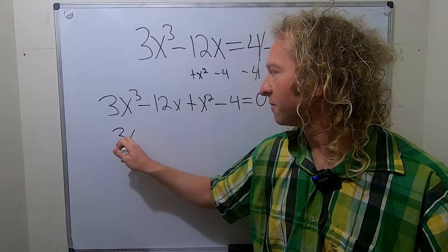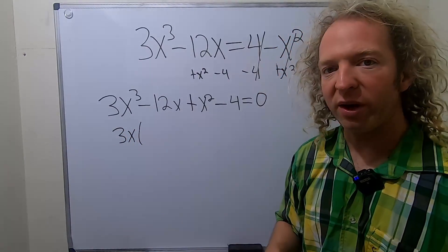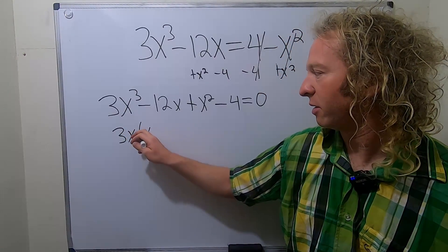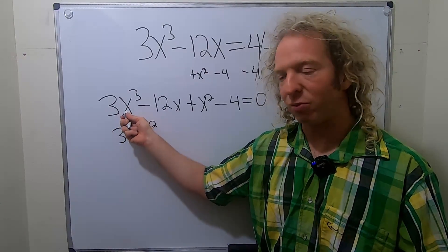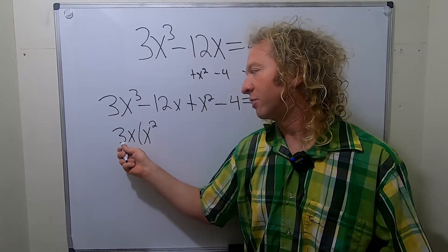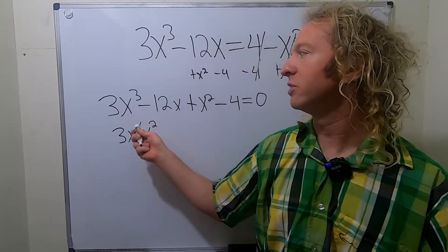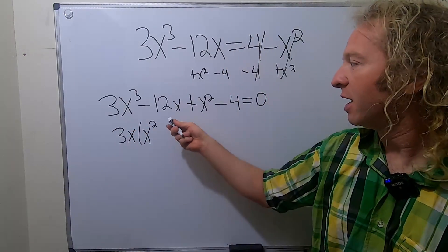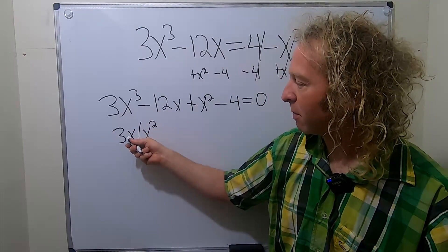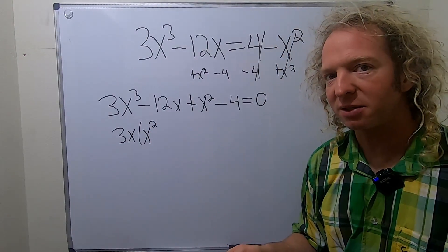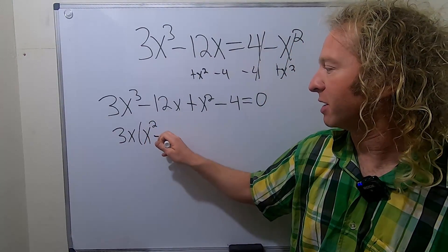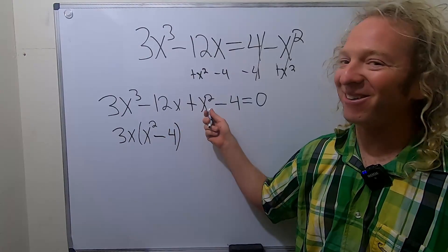So let's do that. This will be 3x, and that will leave us with x squared. Because the question is, what do you multiply by this in order to get this? Well, x squared, because 3x times x squared is 3x cubed. Here, the question becomes, what do we multiply by 3x in order to get negative 12x? Negative 4. This is minus 4.